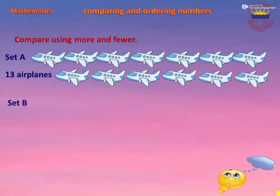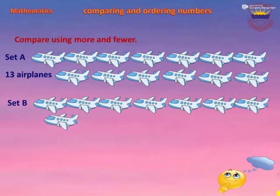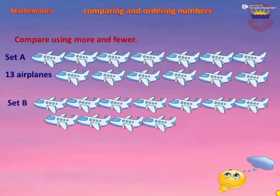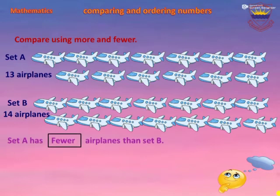Now Set B: one, two, three, four, five, six, seven, eight, nine, ten, eleven, twelve, thirteen, fourteen. In Set B there are 14 airplanes. So which set has more and fewer?